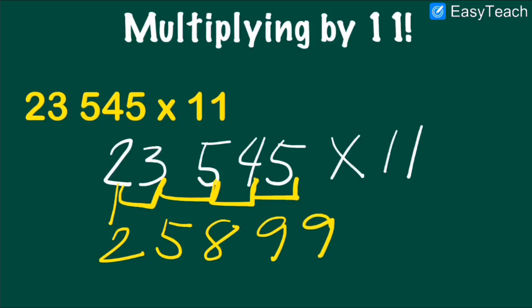And the last step is to copy the last digit, which is 5. Now, we can get the final answer, which is 258,995.